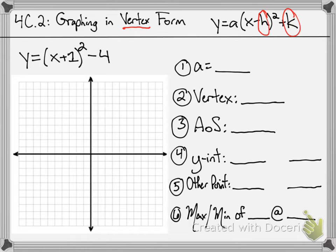First thing we're going to do is establish what the a value is. The a value is always in front of the parentheses. We don't see a number there, so that means there's an invisible 1, which means our parabola is going to open upward because it's a positive a value.